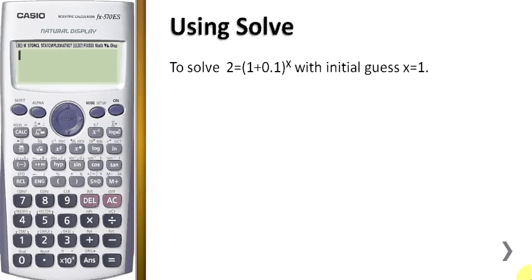In this video, I will show you how to use SOLVE in the Casio FX570EX calculator. First, you have to key in the formula: 2 alpha equal, and then bracket 1 plus 0.1